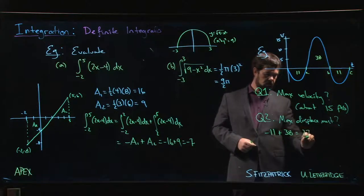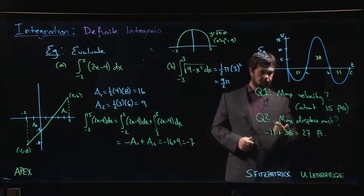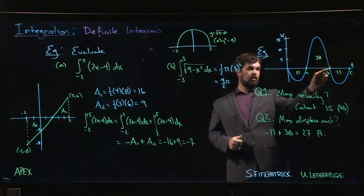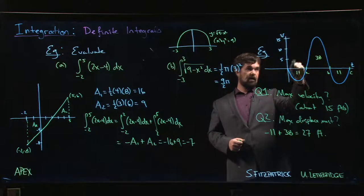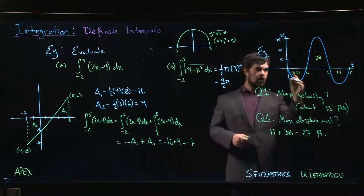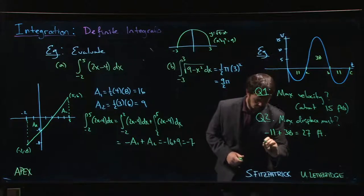It's the integral from 0 to a plus the integral from a to b. This one comes with a negative area, this one comes with positive. We add them together, we get the total displacement. So this is the integral from 0 to a of v(t) dt, and this is the integral from a to b of v(t) dt.